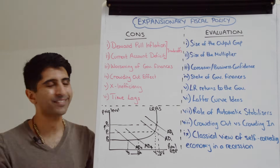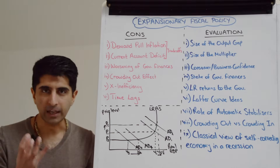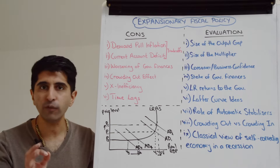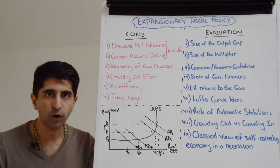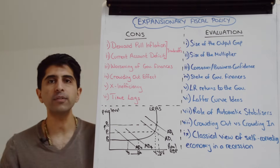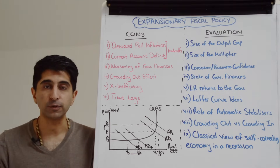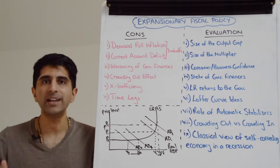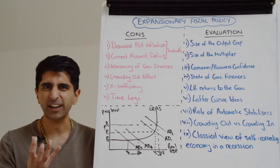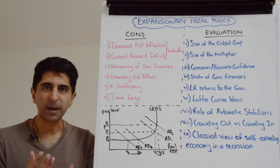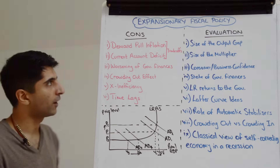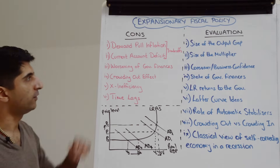A major side effect could be higher demand-pull inflationary pressure, and if inflation overshoots the target, that's not desirable. That conflict of macro objectives is not what we're trying to achieve. Additionally, if economic growth increases, that means higher household incomes and more spending on imports, which could widen the current account deficit — this is called the 'sucking in of imports' effect.